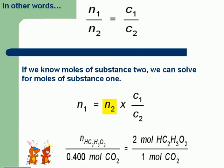If we know the moles of substance 2, we could solve for the moles of substance 1. In the problem given here, we are given the moles of carbon dioxide. The moles of acetic acid consumed is the unknown.